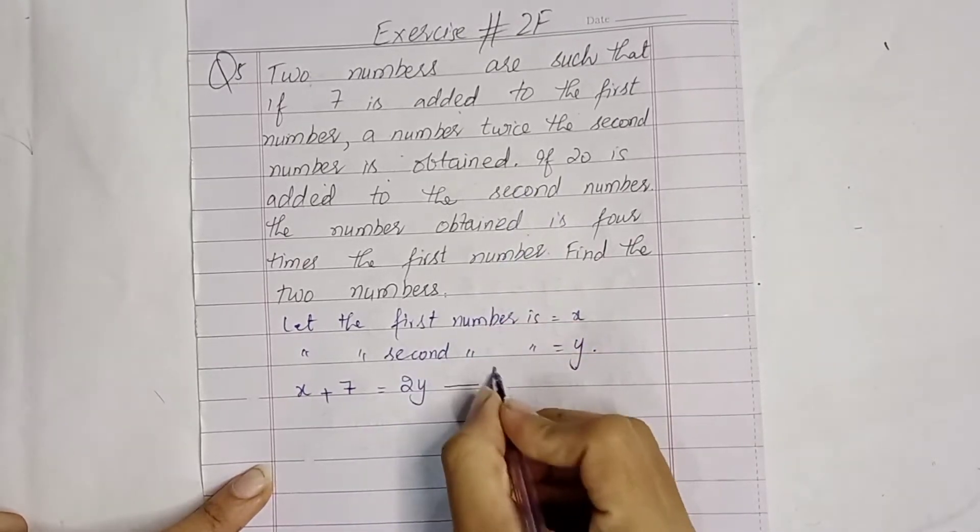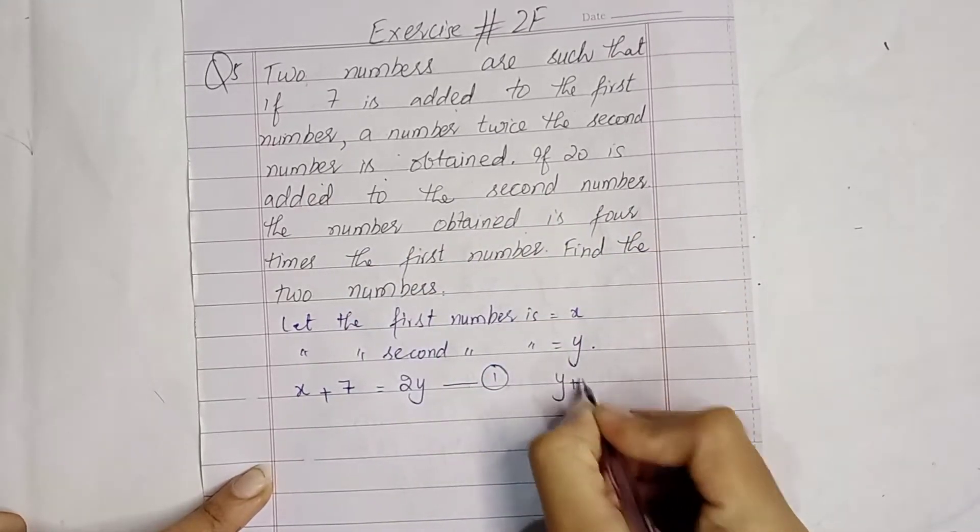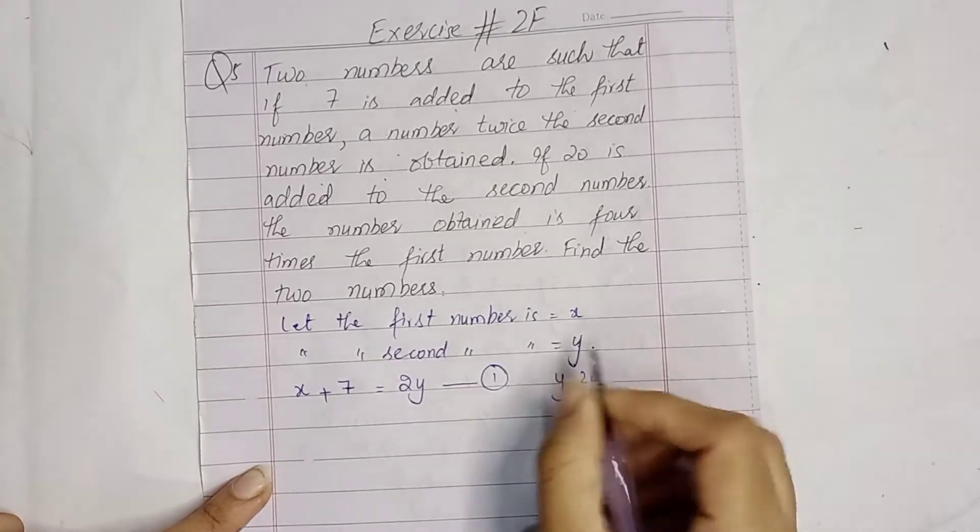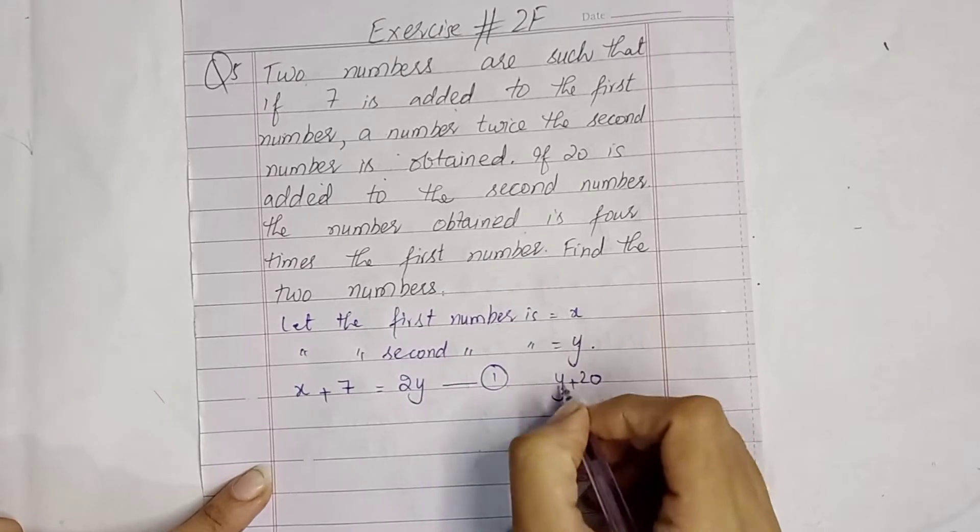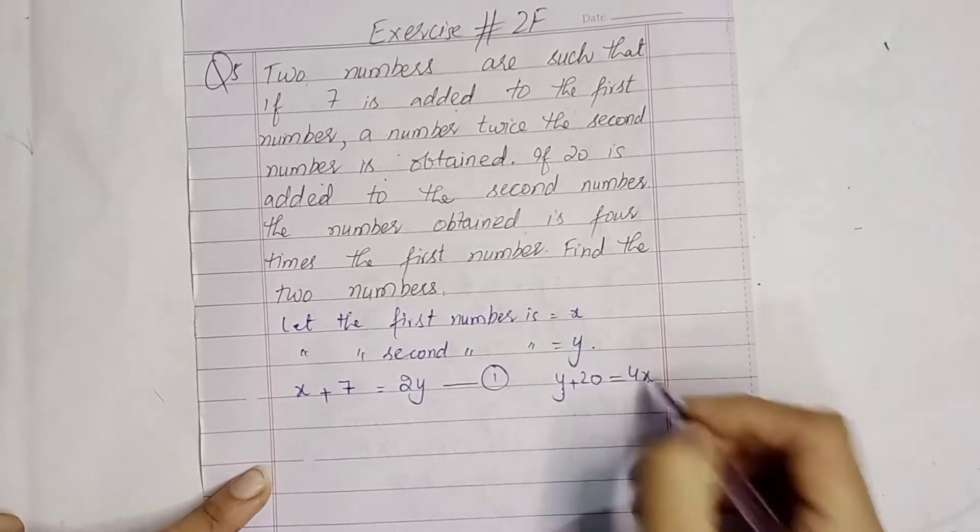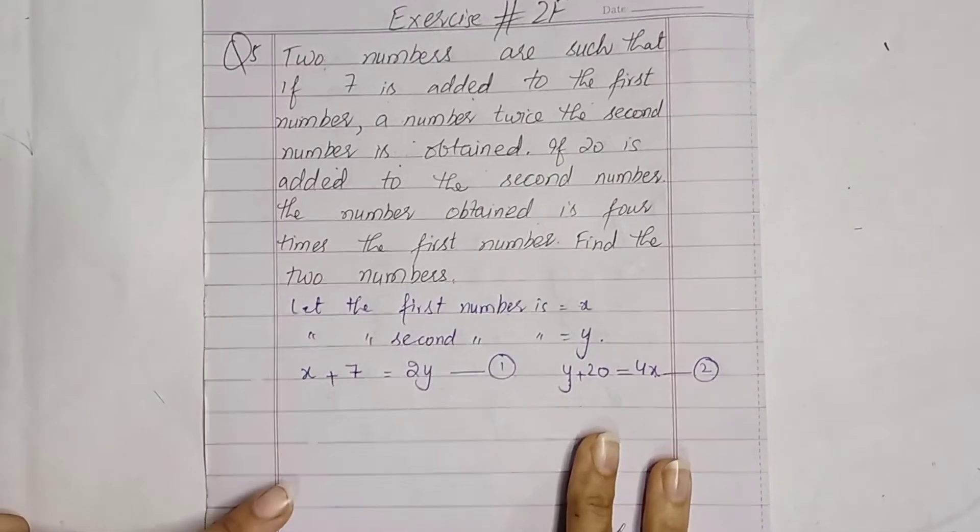Next, if 20 is added to the second number, y plus 20, the number obtained is 4 times the first number, equals 4x. This is our question number 2.